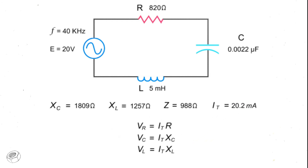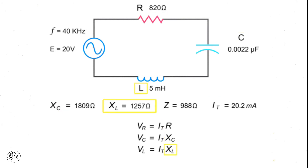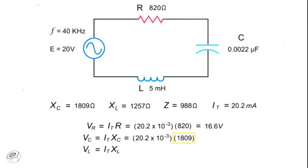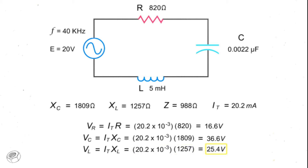To determine the voltage across each component, multiply the total current of 20.2 milliamps by the resistance at each component. For the resistor, it would be 20.2 milliamps times 820 ohms, or 16.6 volts. For the capacitor, it would be 20.2 milliamps times 1,809 ohms, or 36.6 volts. And the inductor voltage would be 20.2 milliamps times 1,257 ohms, or 25.4 volts.